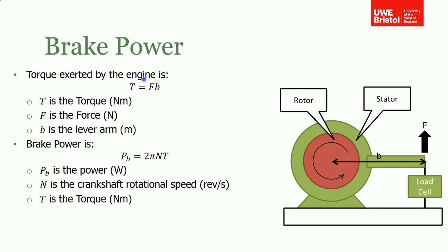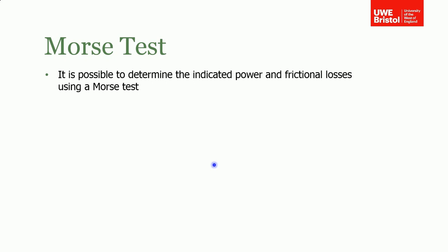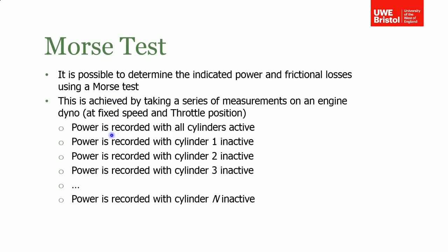You want to get that into power, so the torque is fb. Therefore the power is the rotational component of the velocity—it's 2πn, where n is the engine speed, times by the torque, and that gives you the brake power. A quite simple test was developed called the Morse test to determine the indicator power and frictional losses in an engine.